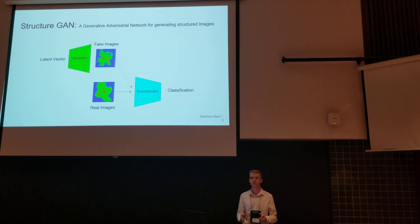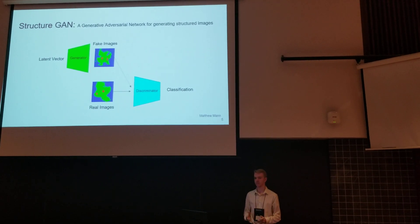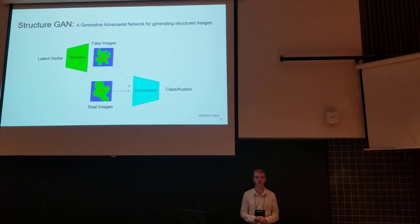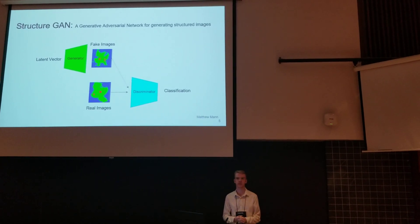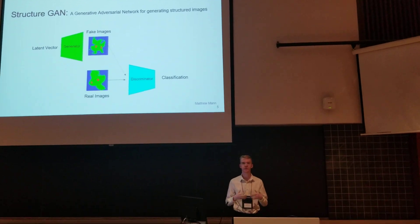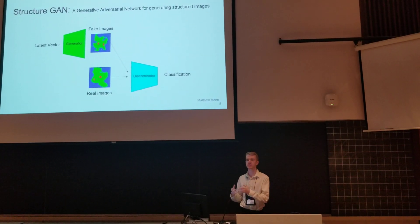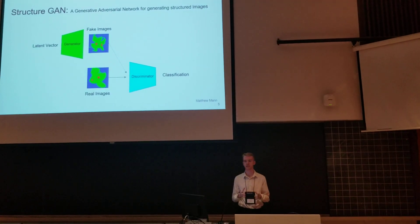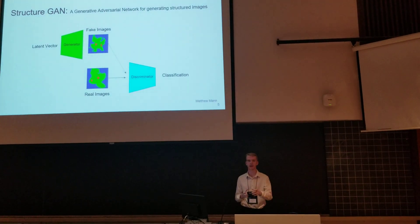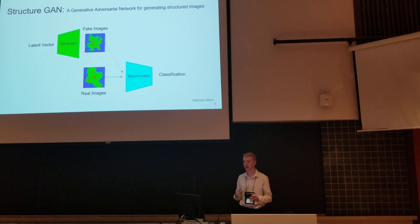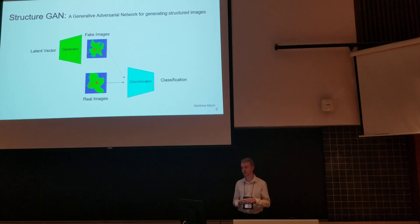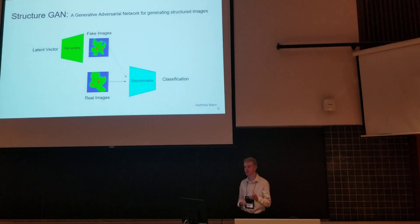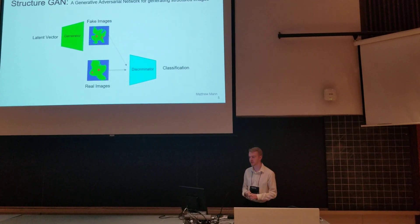Starting with the structure GAN: it is a typical generator and discriminator setup, where the generator produces images to fool the discriminator, whose main objective is to detect differences between fake and real images. As they train back and forth, the discriminator gets better at detecting fakes and the generator becomes better at fooling the discriminator.